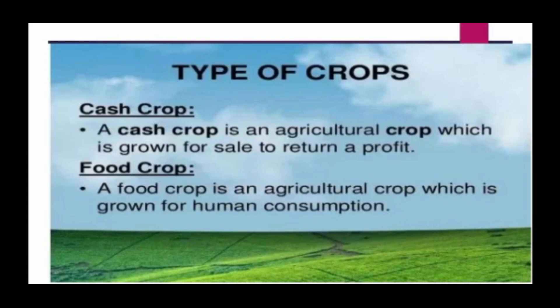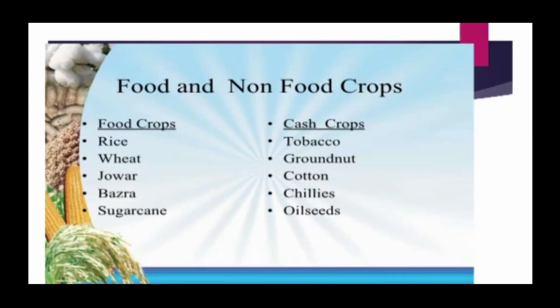A food crop is an agricultural crop which is grown for human consumption. Examples of food crops are rice, wheat, jowar, and sugarcane. Examples of cash crops are groundnut, cotton, chillies, and oilseeds.